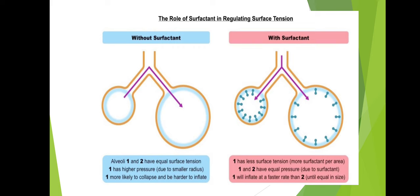On the right in pink, these are your alveoli with surfactant. Both have equal surfactant; however, the smaller one has less surface tension because it has more surfactant per area. They're under equal pressure, which is helped by the surfactant. The smaller one will increase at a faster rate than the larger one until they reach an equal size, because it has lots of surfactant for its area. This helps ensure you don't get that collapse of those smaller alveoli.